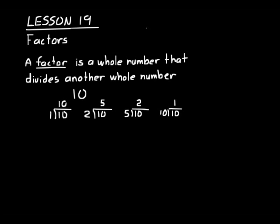So 10, 5, 2, and 1 are all factors of 10. They divide 10 into another whole number. 1 divides 10 into 10. 2 divides 10 into 5. Remember, whole numbers don't have a decimal after them. So 5.2, 4.7, 3.1 — those are decimal numbers, not whole numbers. 5 divides 10 into 2, and 10 divides 10 into 1.